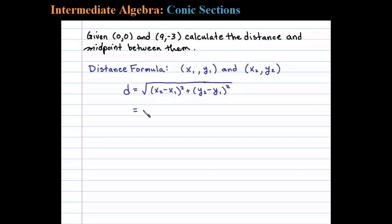In this case, we substitute into the formula. Here, x₂ is 9 and x₁ is 0, so (9-0)². Plus, y₂ is -3 and y₁ is 0, so we have (-3-0)².